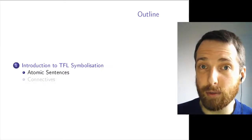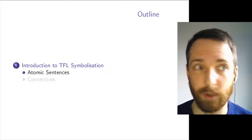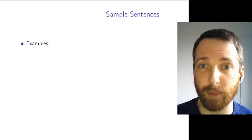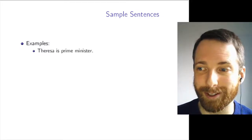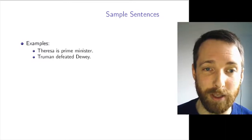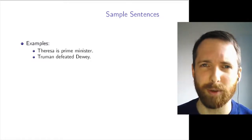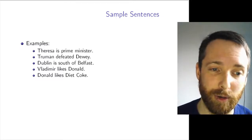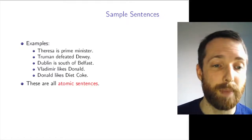In TFL, there are two main concepts you need to get to grips with to understand how the logic works. The first one is atomic sentences. Let me get at what an atomic sentence is by giving you some examples. Here is a sentence: Teresa is prime minister — this is no longer true. Truman defeated Dewey — that's also an atomic sentence. Dublin is south of Belfast. Vladimir likes Donald. Donald likes Diet Coke. These are all atomic sentences.